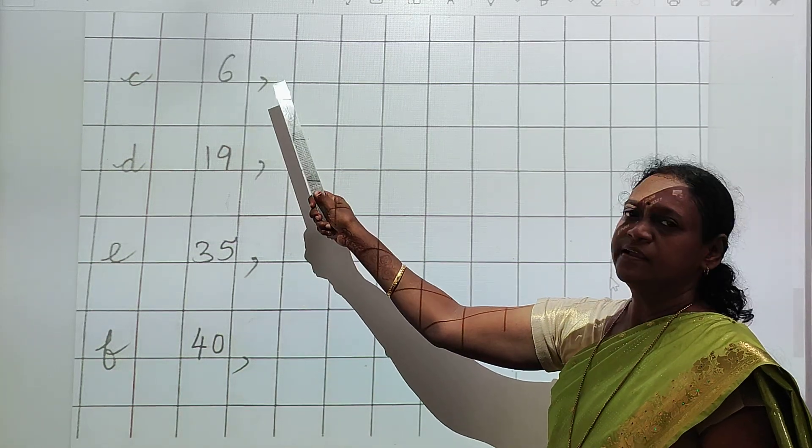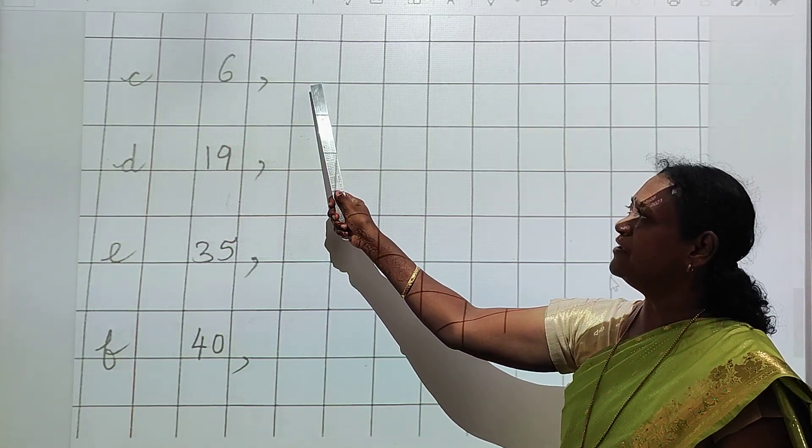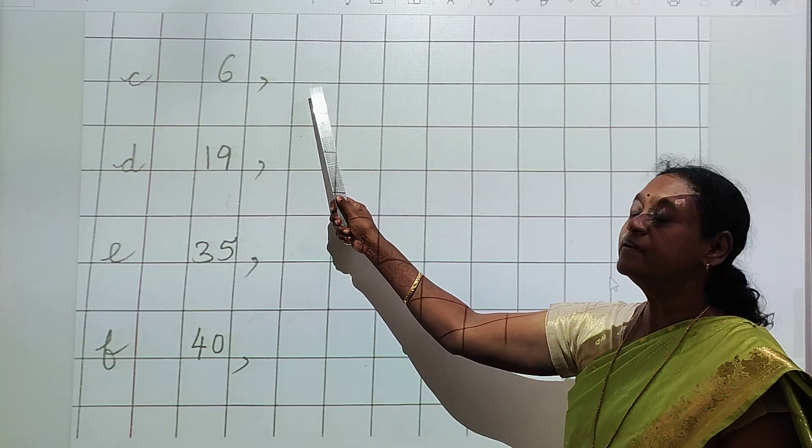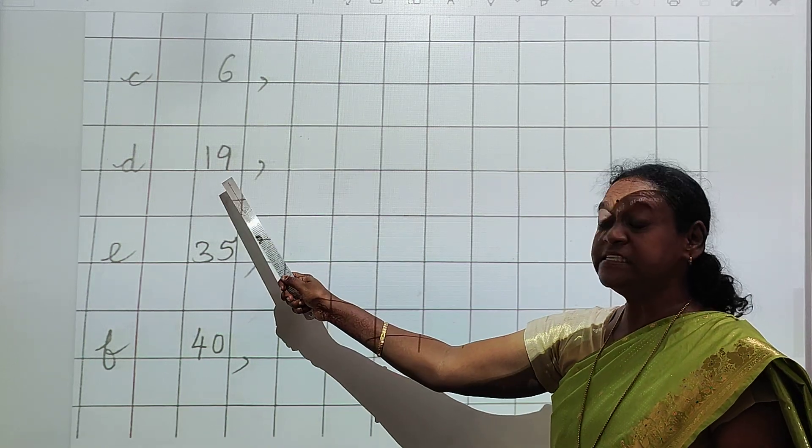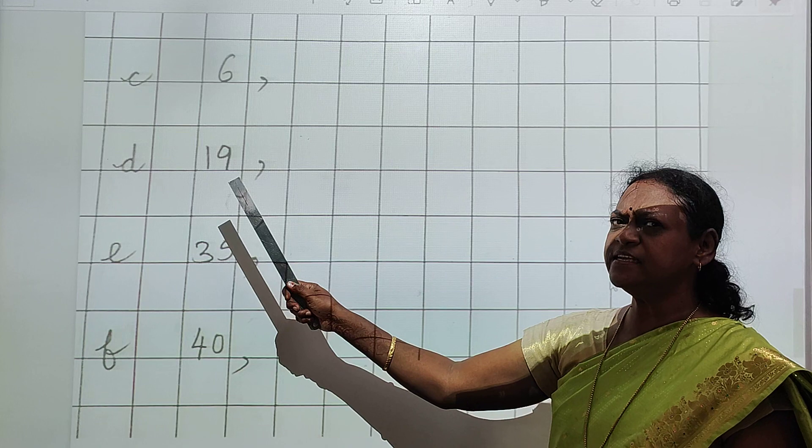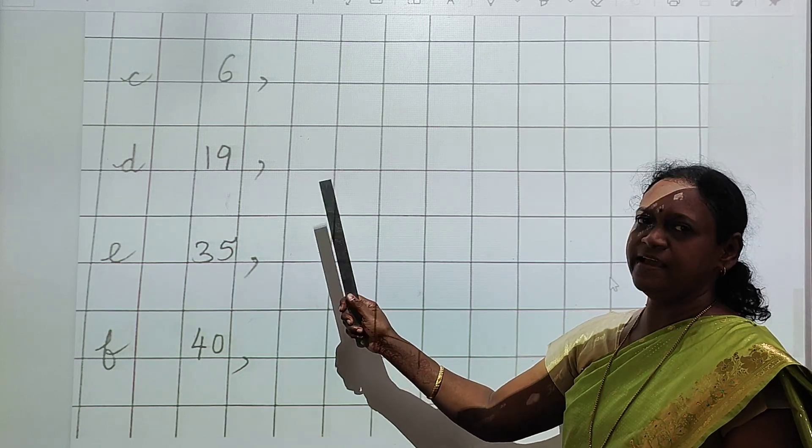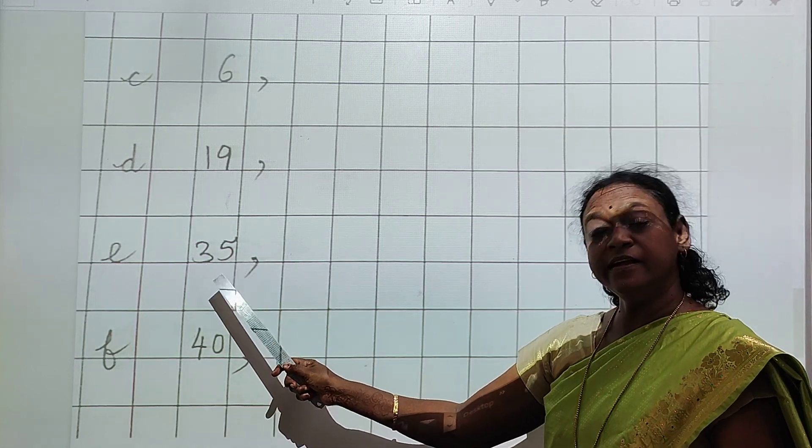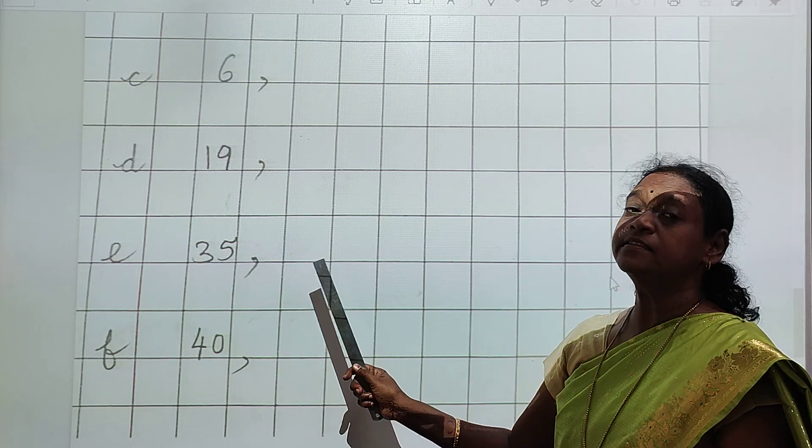Third number is 6. Yaha one box mein comma lagaenge, phir likhenge. Answer kya likhenge? 7. 19. So what comes after 19? 20. Yes. What is this? 35. So you have to write 36.